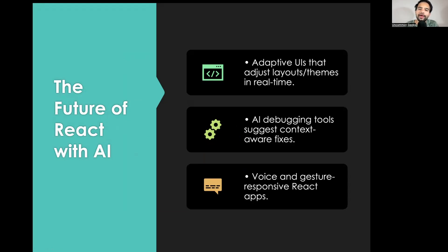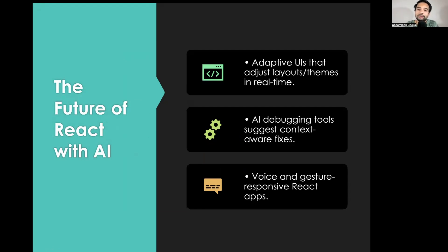The future of AI with React looks like this: we're no longer going to have AI only running on the backend — AI models will start running on the client side. Second, the UI is no longer going to be static; depending on the user persona and perspective, the UI is going to be extremely dynamic. Third, there are adaptive UIs and AI debugging tools for front-end developers — there are so many tools coming in. I'm making another video about UI tools that front-end developers must use in 2025.